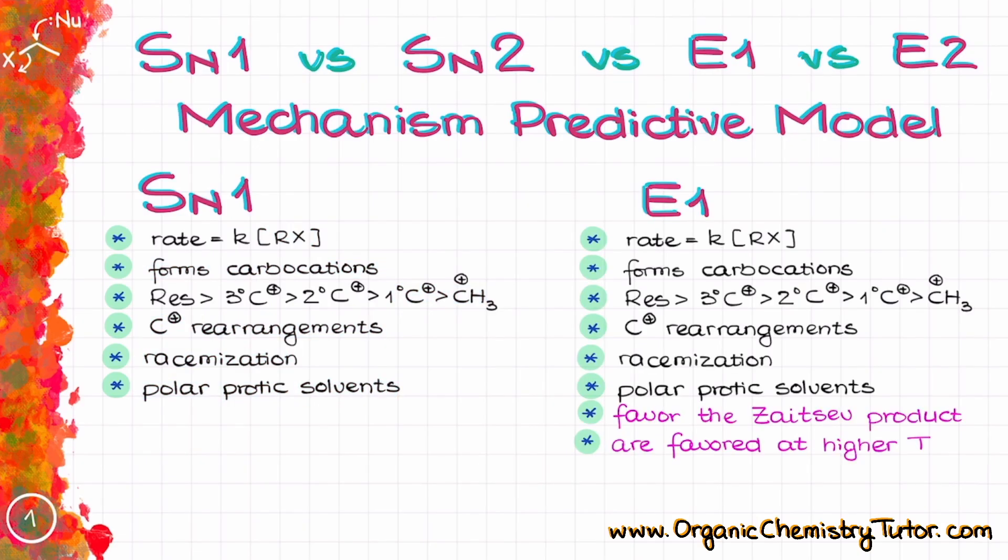The E1 reactions have a lot of similarities with SN1 reactions as they also share the mechanistic pathway and the carbocation intermediate. So they are also unimolecular reactions, they also form carbocations, and they also do not work for primary and methyl carbocations, so we typically only want to see the resonance stabilized tertiary or secondary carbocations.